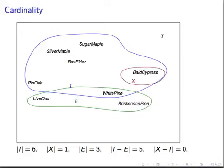The cardinality of set E, that is the evergreen species under our discussion presently, is three. And the cardinality of the set I minus E is five. The cardinality of the set X minus I is zero.